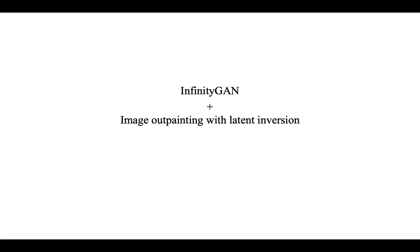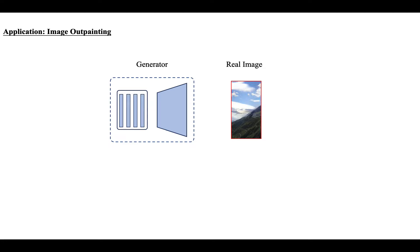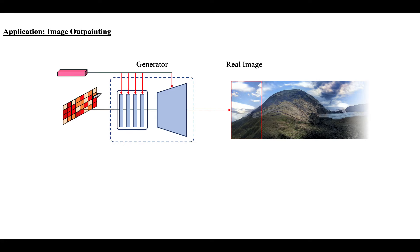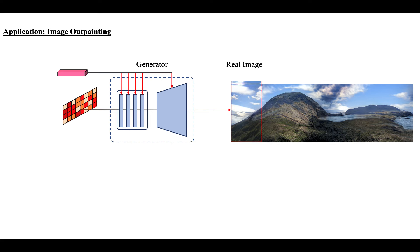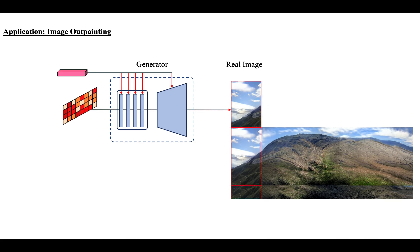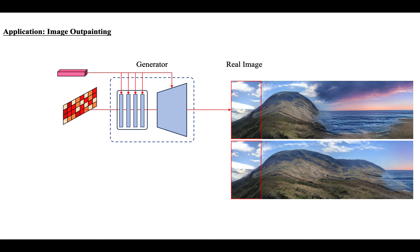Now, back to the outpainting task with InfinityGAN. We can now perform better outpainting by combining InfinityGAN and GAN inversion. Given a real image, we can invert a latent variable that best reconstructs it using gradient-based optimization, adopting a similar pipeline to In&Out. We can then outpaint the real image by sampling a spatially extended local latent variable. By sampling different local latent variables, we can achieve multimodality at no additional cost.